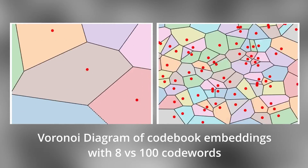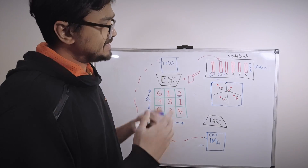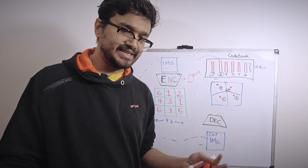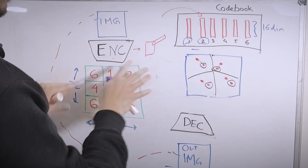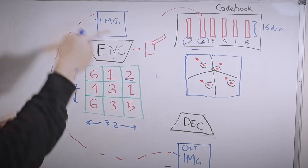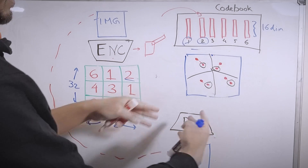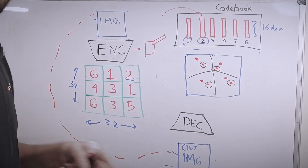Intuitively, these codewords capture different semantic meanings inside the image, and the grid captures how those semantic meanings are spatially arranged in the original image. So if we can generate random grids and pass them through the decoder, it should generate new images according to the spatial and semantic code we input. Because we still have the encoder-decoder architecture, we can convert back and forth between images and their codified representations — continuous fingerprints replaced with a sequence of symbols.